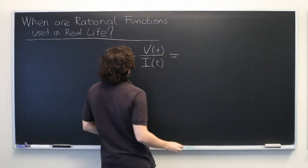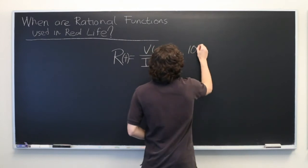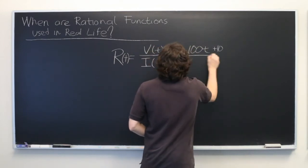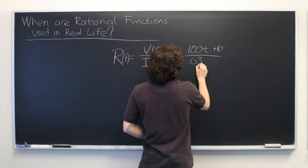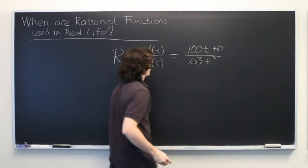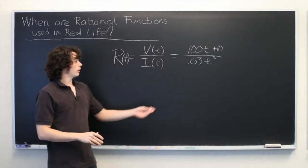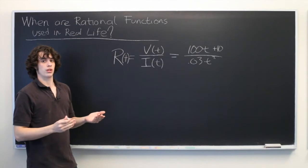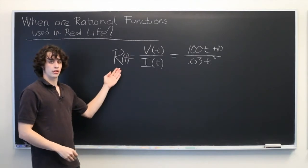Perhaps it might be something like 100t plus 10 over 0.03t squared. Who knows how the system works? But clearly, this is a rational function. You need to understand rational functions if you want to understand the behavior of the resistance over time.